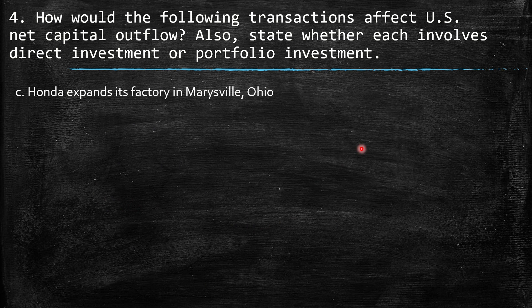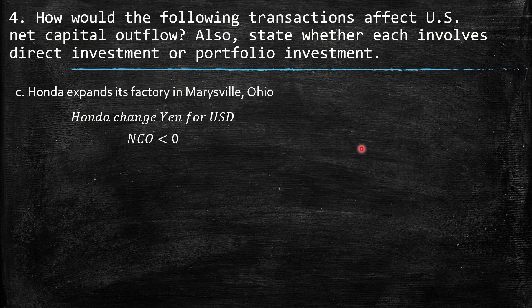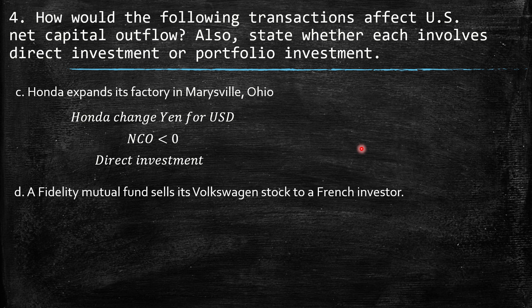C: Honda expands its factory in Marysville, Ohio. Here Honda changes Yen for USD, so net capital outflow is lower than zero because we have foreign people holding domestic assets. This is more about direct investment because the company is making a larger investment into this factory.